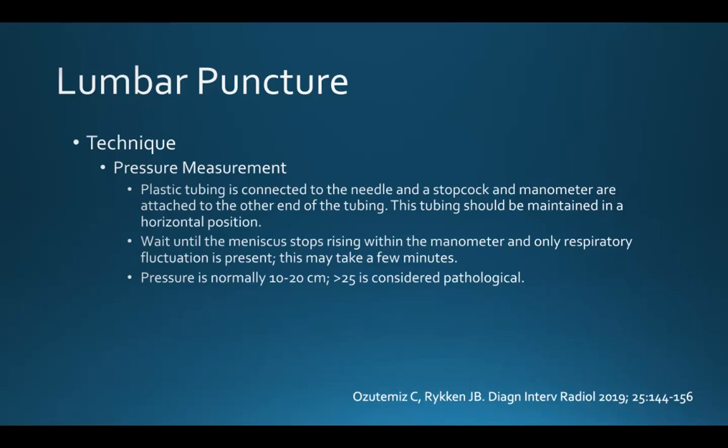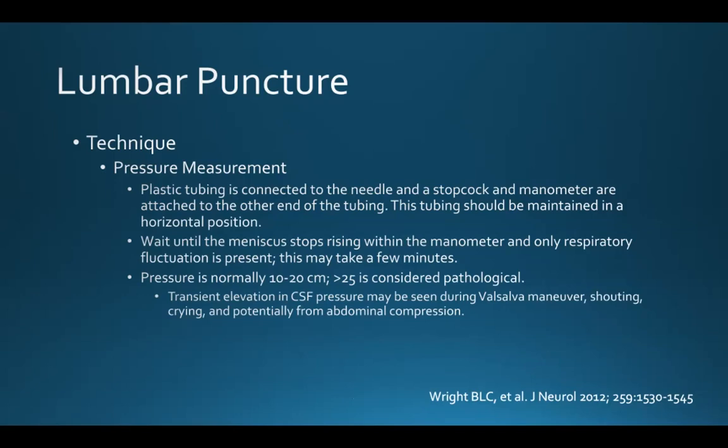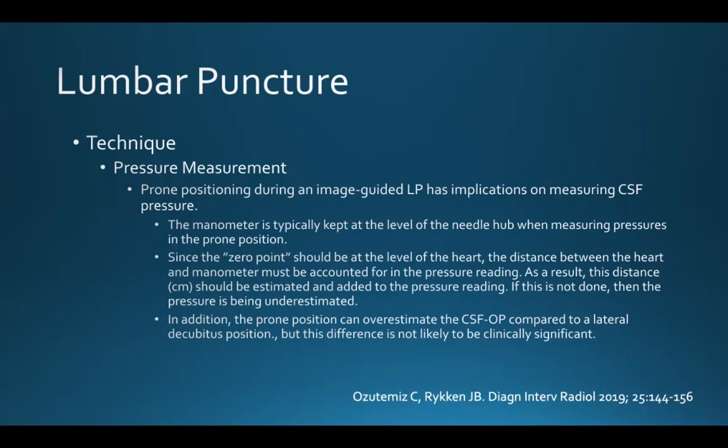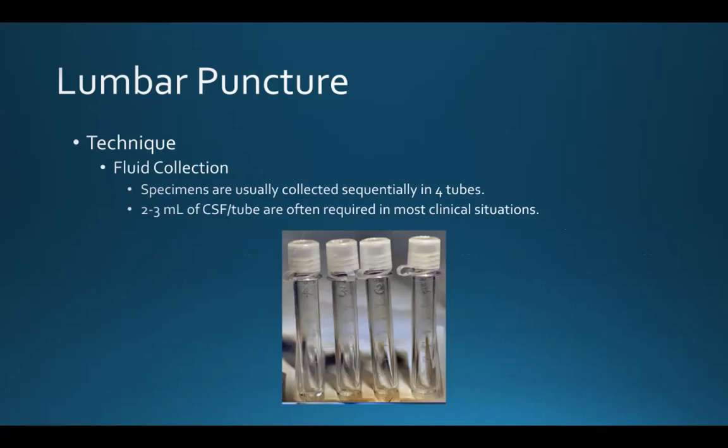The pressure is normally 10 to 20 centimeters of water, and greater than 25 is considered pathological. Transient elevations may be seen during a Valsalva maneuver, when the patient is shouting or crying, and from abdominal compression. The prone positioning during an image-guided LP has implications on measuring CSF pressure. The manometer is kept at the level of the needle hub, but since the zero point should be at the level of the heart, the distance between the heart and manometer must be estimated and added to the pressure reading — otherwise, pressure is being underestimated. Being in the prone position can also overestimate opening pressure compared to a lateral decubitus position, but this difference is not felt to be clinically significant.